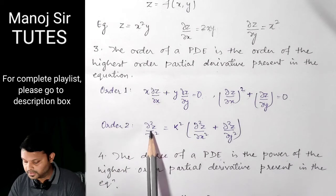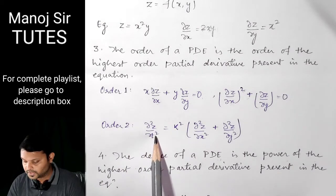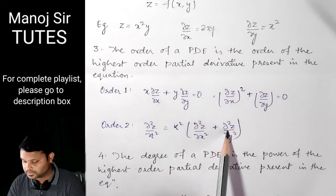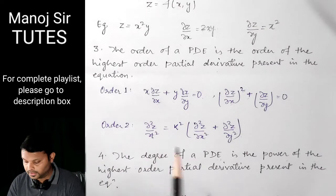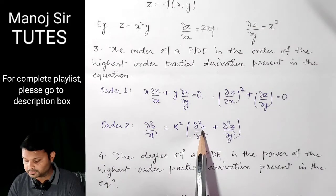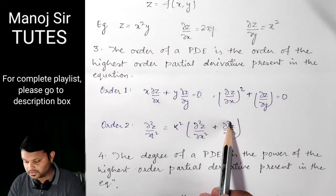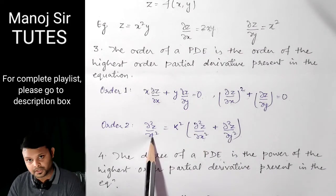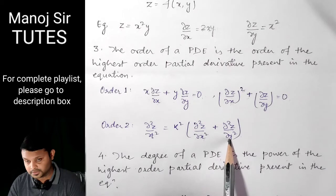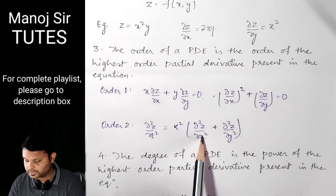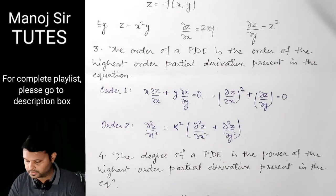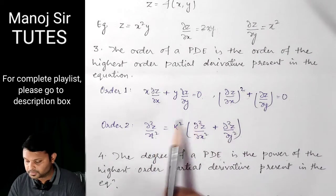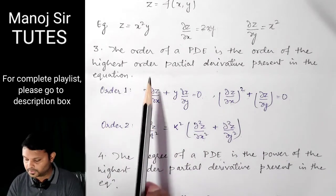Now coming to Order 2. Here you can see: DEL squared Z upon DEL T squared equals K squared times DEL squared Z upon DEL X squared plus DEL squared Z upon DEL Y squared. Here Z is differentiated twice with respect to T, twice with respect to X, and twice with respect to Y. So the highest order partial derivative present in this particular equation is 2, meaning the order of this PDE is 2.